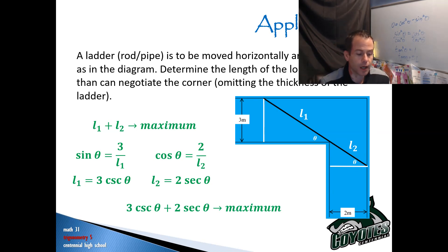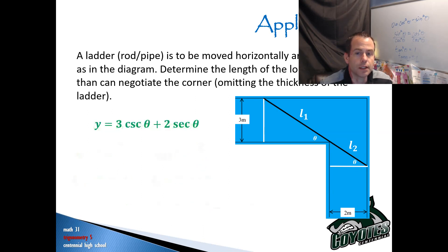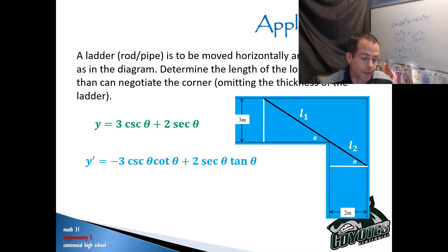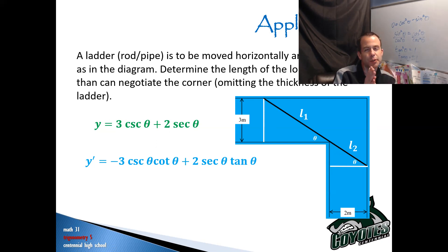The derivative of cosecant is negative cosecant cotangent, so that gives negative 3 cosecant theta cotangent theta. The derivative of secant is secant tangent, so that gives 2 secant theta tan theta. Now I need to clean this up. I'm going to switch things back to sine and cosine so that I can solve for when the derivative is zero or when it doesn't exist, to get my critical numbers.